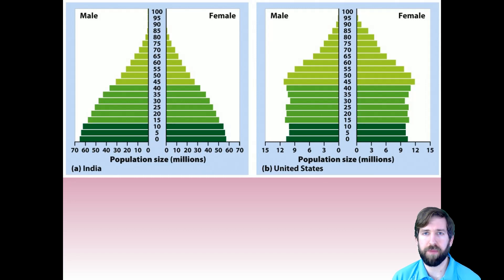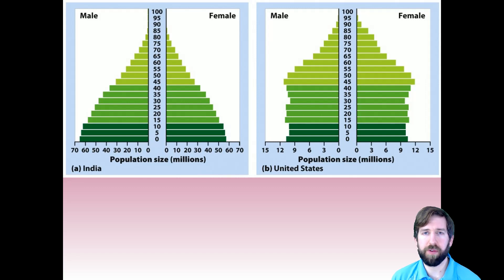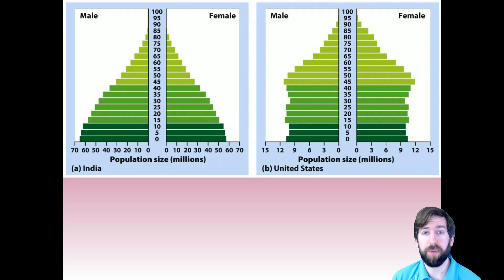Looking at the United States population pyramid, the dark green on the bottom is actually lower than the reproductive group — they are having fewer children. There is also a larger population growing into old age and a skew of females to males, predominantly because of war and the fact that females in the US live longer than males. Because of the different shapes between India and the United States, you can see that India is growing rapidly while the US population is pretty much stable — the layers from age 50 and below are just about the same.